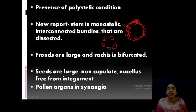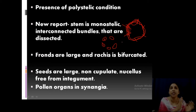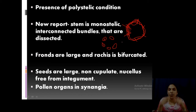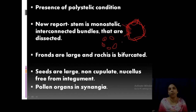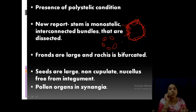Fronds are large, and rachises are bifurcated — dichotomously branched. This is the same feature studied in Lyginopteridaceae. Seeds are very large and non-cupulate; cupules or the integument sheath are absent. The nucellus is free from the integument — that is an important point. Pollen organs are arranged in synangia. Synangia are groups of sporangia, a typical feature in Pteridospermales, and it is also present here.